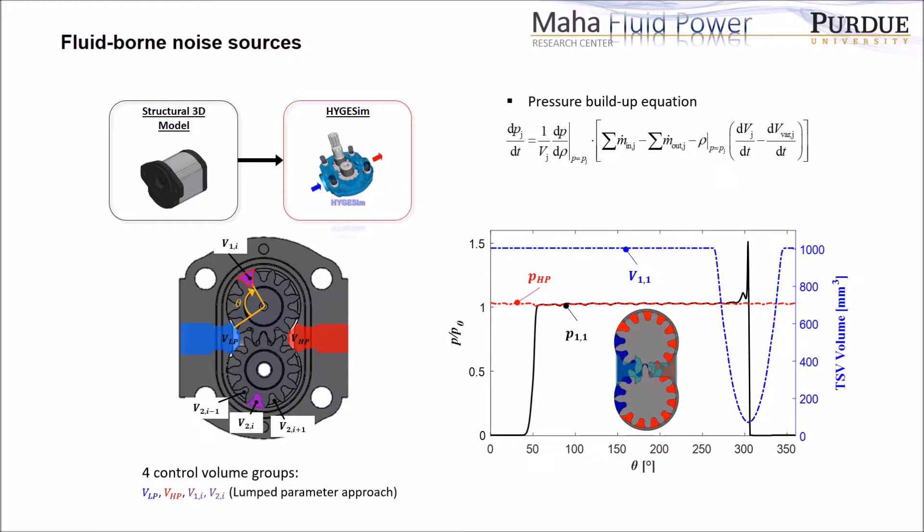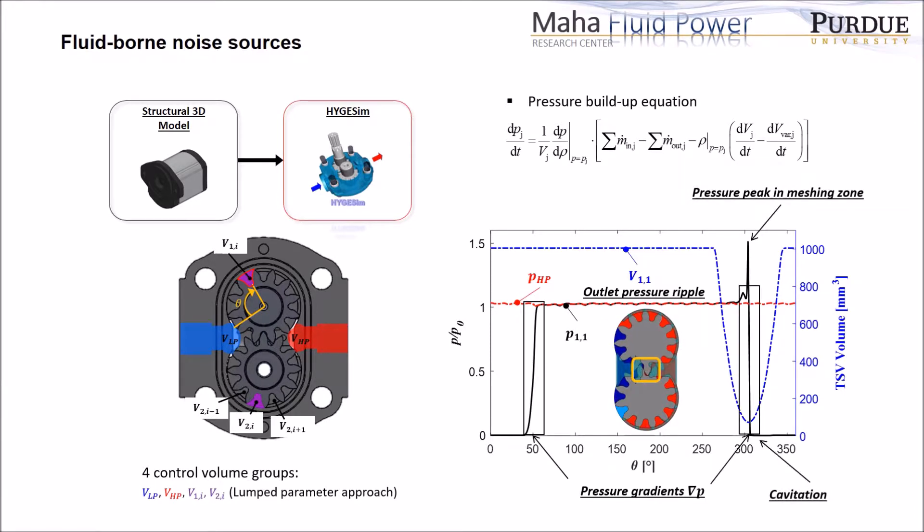As the gear rotates, the tooth-space volume goes through a steep pressure gradient and the outlet pressure ripple. Inside the meshing zone, the tooth-space volume faces the higher pressure peak, another steep pressure gradient, and cavitation. The contributions of all these noise sources are considered in a direct or indirect way in the model.